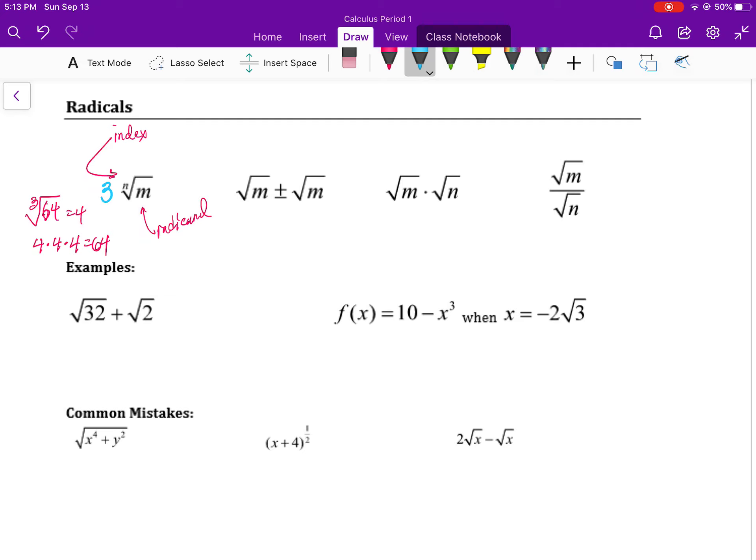In order to combine—and by combine we mean add or subtract—radicals, we need to have the same index. In this case there's an implied index of 2 on both of these, and you also need the same radicand. The way that you then combine them is you add or subtract the coefficient of the radicals.